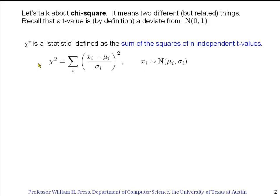then χ² is defined as the sum of the squares of the individual t-values. In other words, an individual t-value is the value of x minus its mean divided by its standard deviation, and then we simply sum as many of these as there are x's, for example, n of them.